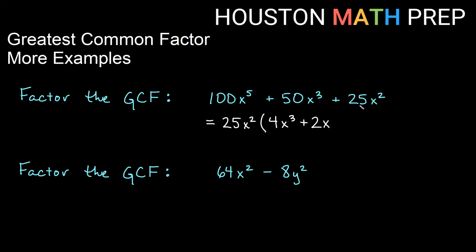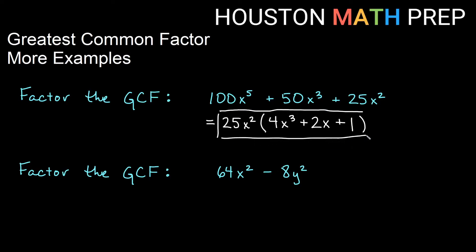For the last term, 25x squared times what gives 25x squared? Similar to the first example, don't forget to put plus 1 — it is 25x squared times 1 that gives you the last term, so that when we distribute we get back what we started with. That's the answer on that one.